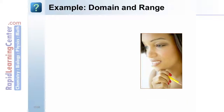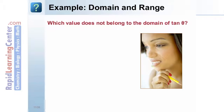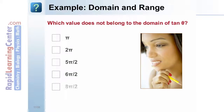Example — Domain and Range: Which value does not belong to the domain of tangent of theta? Pi, 2pi, 5pi over 2, 6pi over 2, or 8pi over 2? The domain of tangent of theta is all values not equal to pi over 2 plus k times pi, where k is any integer. Tangent is undefined for theta equal to 5pi over 2. Therefore, 5pi over 2 does not belong to the domain of tangent of theta.